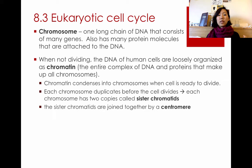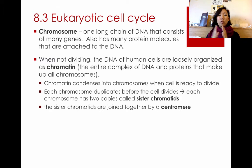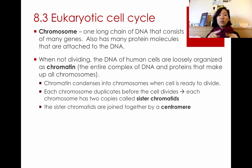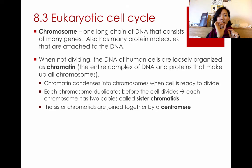Each chromosome duplicates before cell division, the same way DNA was duplicated first in binary fission for prokaryotes. The chromosome duplicates and then it looks like a little X. Each chromosome has its pair of sister chromatids — the two copies of chromosomes — connected together by something called the centromere.